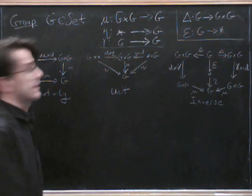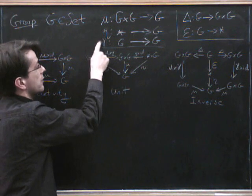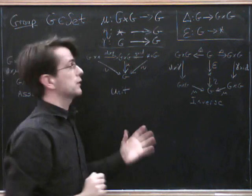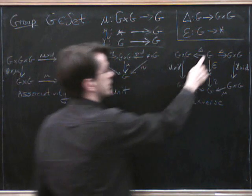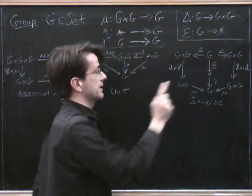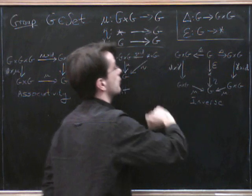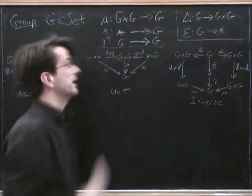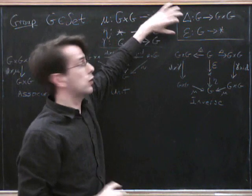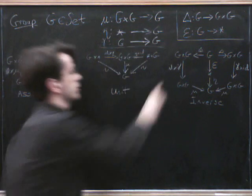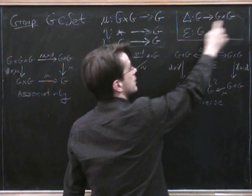And so we can happily define that in any monoidal category, as we'll see in a bit. But what we have here is this inverse is going to cause us a slight amount of problems, because to actually define the axiom of the inverse, what we need is these two extra bits of data, which are delta and epsilon. So these come for free in the category of sets, because as I explained, we've got the categorical product as our tensor product. So cross is a product in the categorical sense, so we automatically get this diagonal map for free.